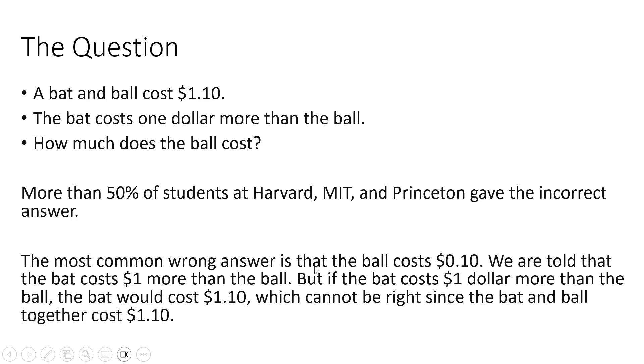The most common wrong answer is that the ball cost $0.10. We're told that the bat costs $1 more than the ball. But if the bat costs $1 more than the ball, the bat would cost $1.10, which cannot be right since the bat and the ball together cost $1.10.